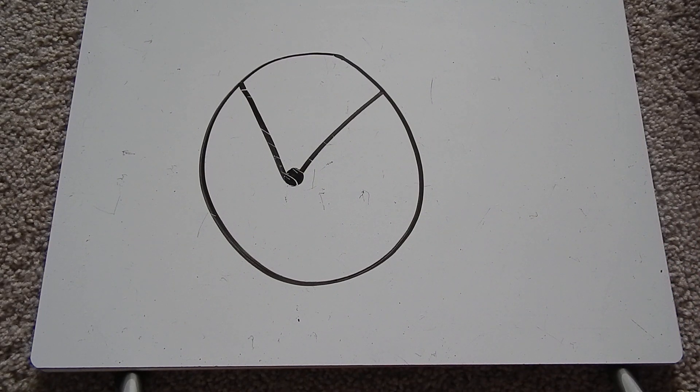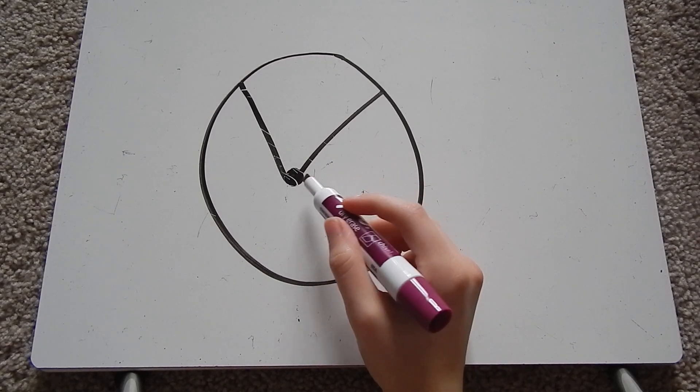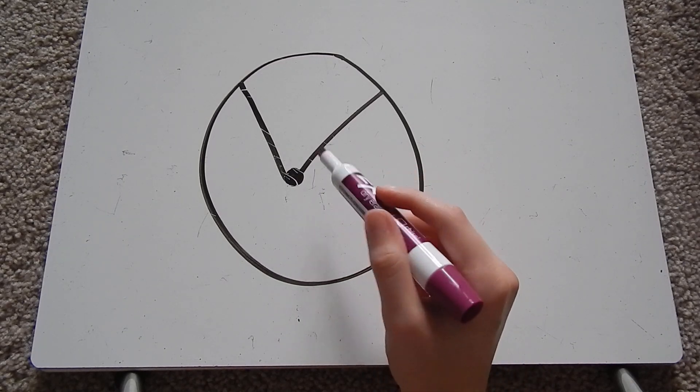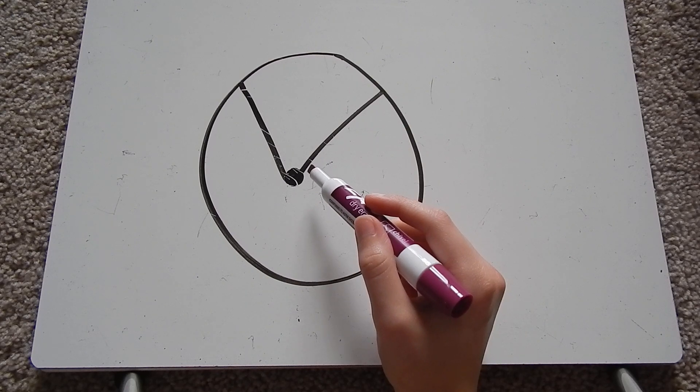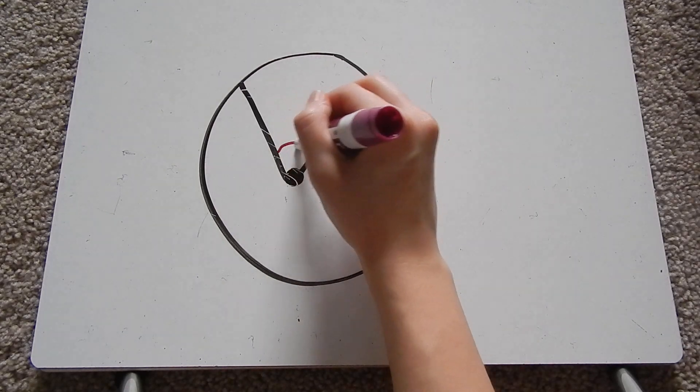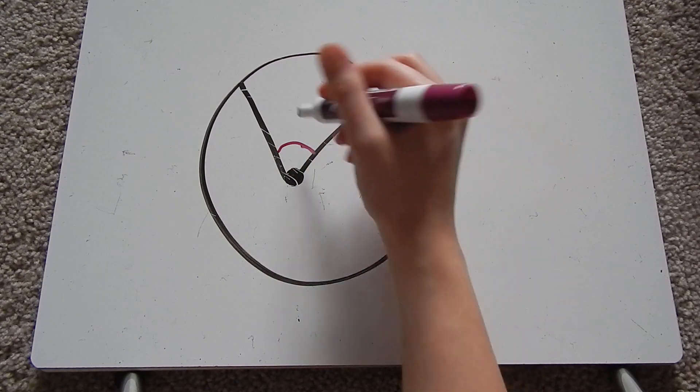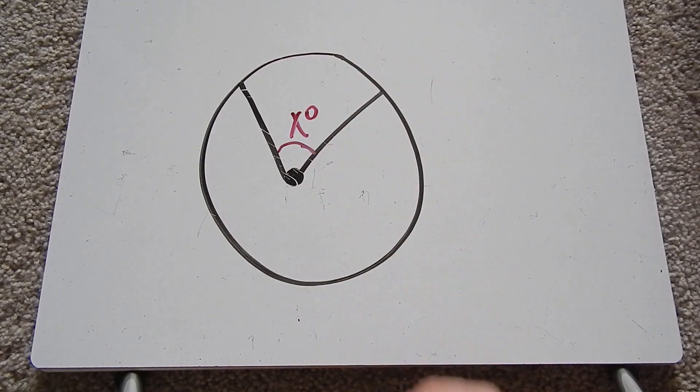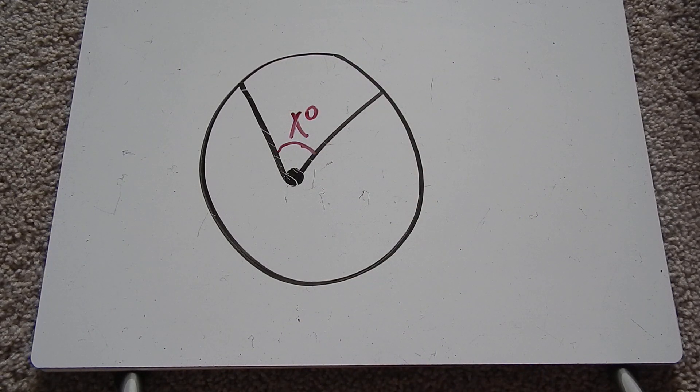So a central angle is an angle from the center of the circle. So this dot here is supposed to be the center, I know it's not exact, but I tried. So a central angle is going to be this. So this is some kind of angle measure, let's call it x degrees. Well what we know about that central angle measure is that it's the same measure as the intercepted arc.